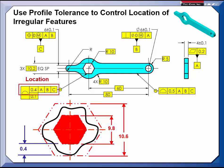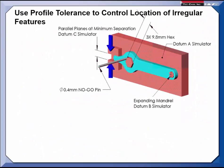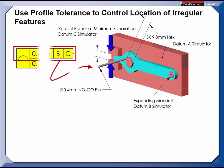Because we have an inner and outer boundary that corrals the feature on the part, we can inspect it with a functional type gauge. Here we see an illustration of a functional gauge. The gauge will verify the requirements of the upper segment, the location of the hex.